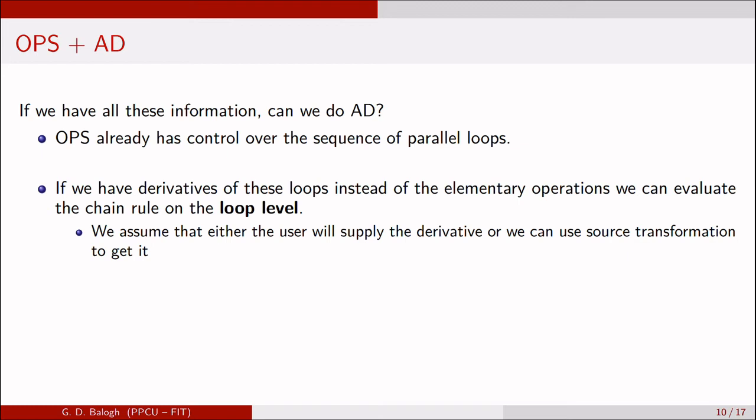If we suppose that we have the derivatives, then we can record the chain of loops that are accessed during the computation of the primal code, and then we can basically reverse the order of the loops. In this way we can evaluate the chain rule at the loop level.